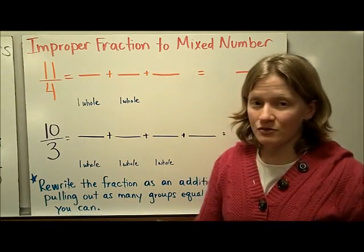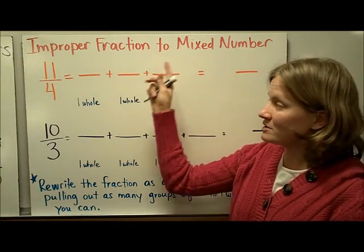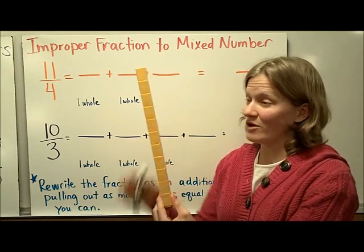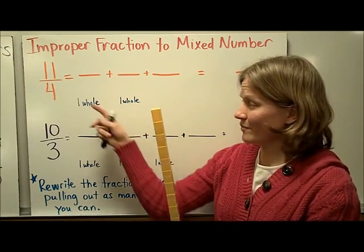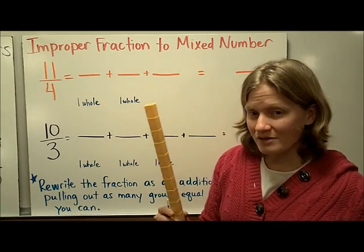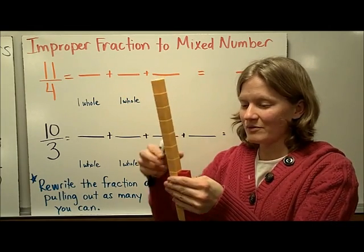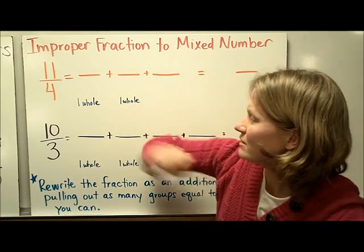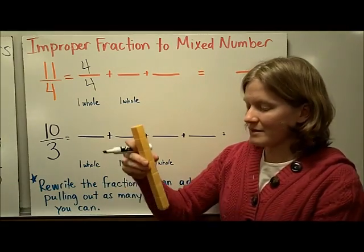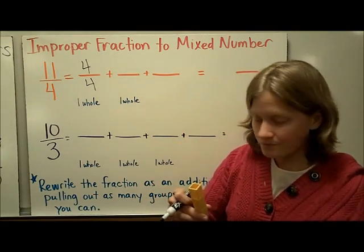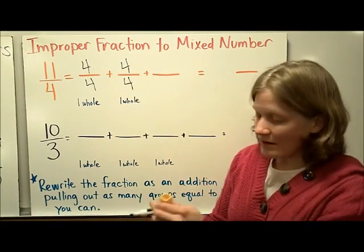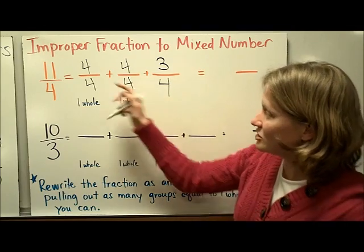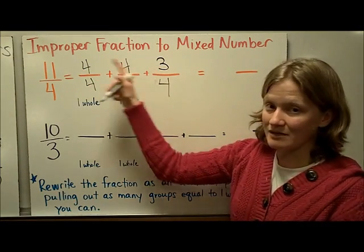There will be times where you have to convert back and forth between improper fractions and mixed numbers. So we have 11 fourths, and if we were thinking about that in fraction towers, that would be like we stuck 11 one-fourth pieces together. In order to figure out what that would be as a whole number, you can think about pulling out an amount of fourths equal to 1 whole. So first I would take away 4 fourths, which equals 1 whole, then take out another 4 fourths. I don't have enough left to make another whole, so I write what I have left, which is 3 fourths. And to check: 4 plus 4 is 8, 9, 10, 11 — so that does equal 11 fourths.